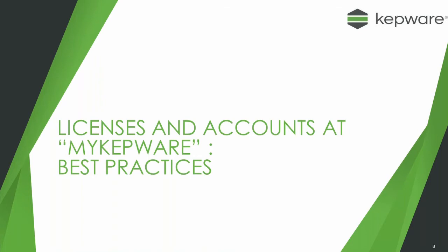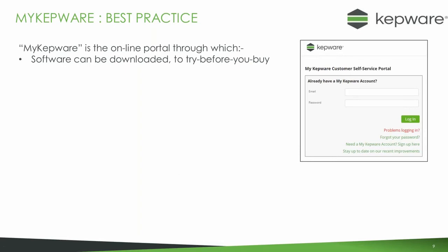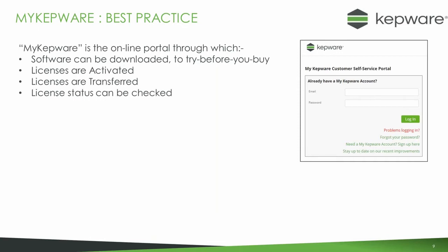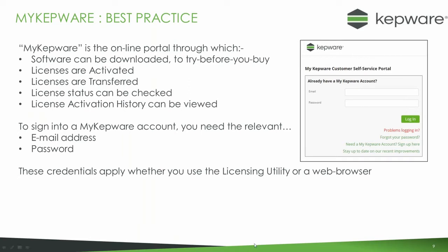Now let's look at some best practices for creating a MyKepware account. MyKepware is the online portal through which software can be downloaded so you can try it before you buy, through which licenses are activated and transferred, through which license status can be checked, and through which activation histories can be viewed. You'll need the relevant email address and password to sign into the MyKepware account, and these are the same credentials used whether you're using the license utility or a web browser.